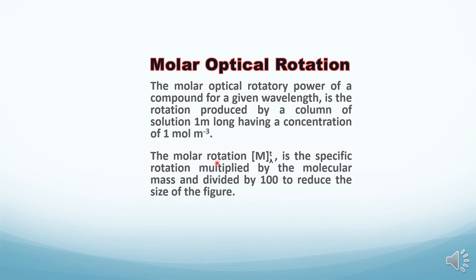To obtain molar rotation, we multiply the specific rotation by the molecular mass and divide by 100.